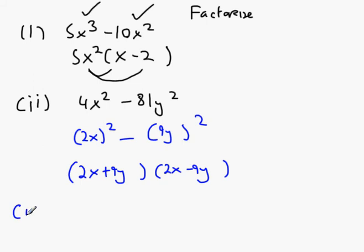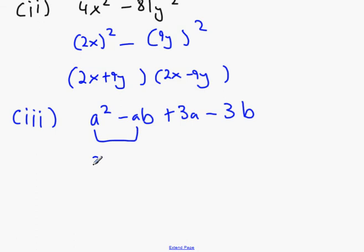Now what about the next one here, part 3? a squared minus ab plus 3a minus 3b. What do we get here? What can we take out? We take out a and we get a times a minus b. Check it. a multiplied by a, a squared, a multiplied by minus b, minus ab. Next one, take 3 out and what's left? a minus b. 3 by a, 3a. 3 by minus b, minus 3b.